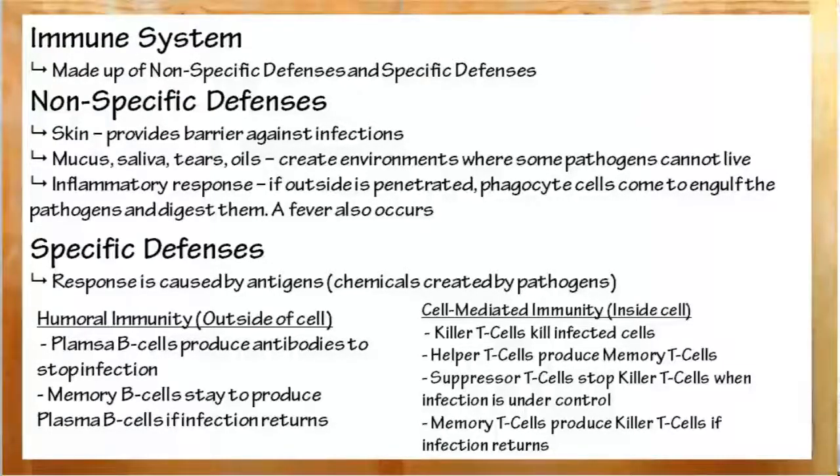Then we have the specific defenses triggered by antigens, which are produced by whatever is infecting the body. We have two types, humoral immunity and cell-mediated immunity. Humoral immunity is for infections in bodily fluids. Here we have B cells. Two types. Plasma B cells. These will create antibodies at random. The antibodies, if correct, will bond to the antigens and ultimately attack the infection. Once the right antibodies are found, the memory B cells will be kept to remember how to fight off the infection and the right antibodies to use.